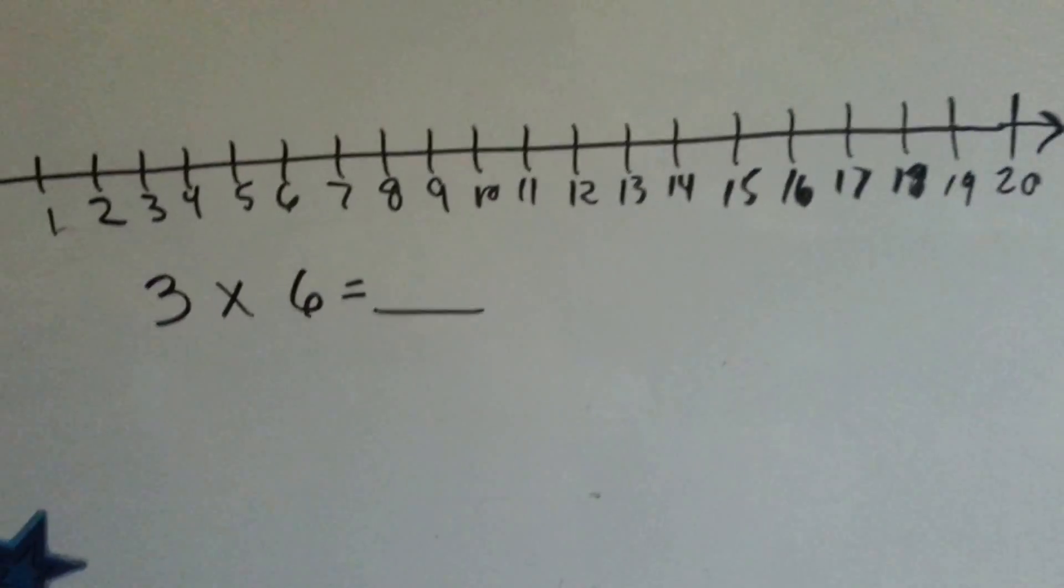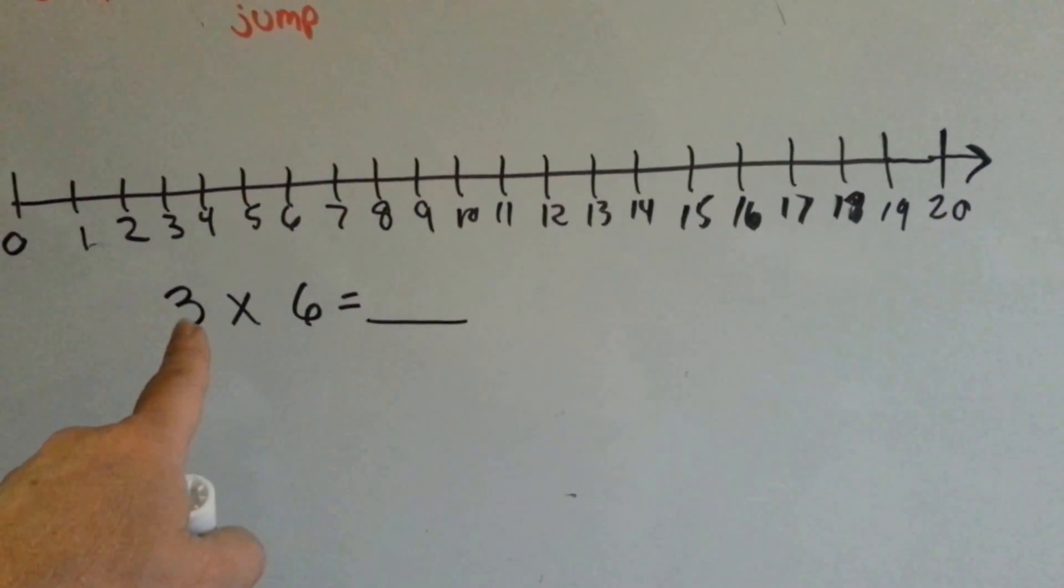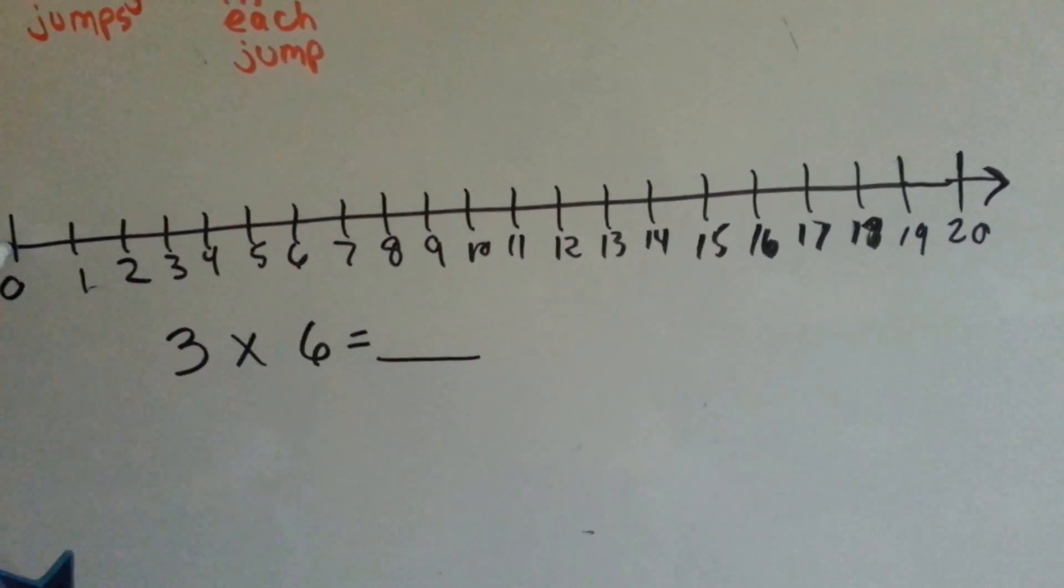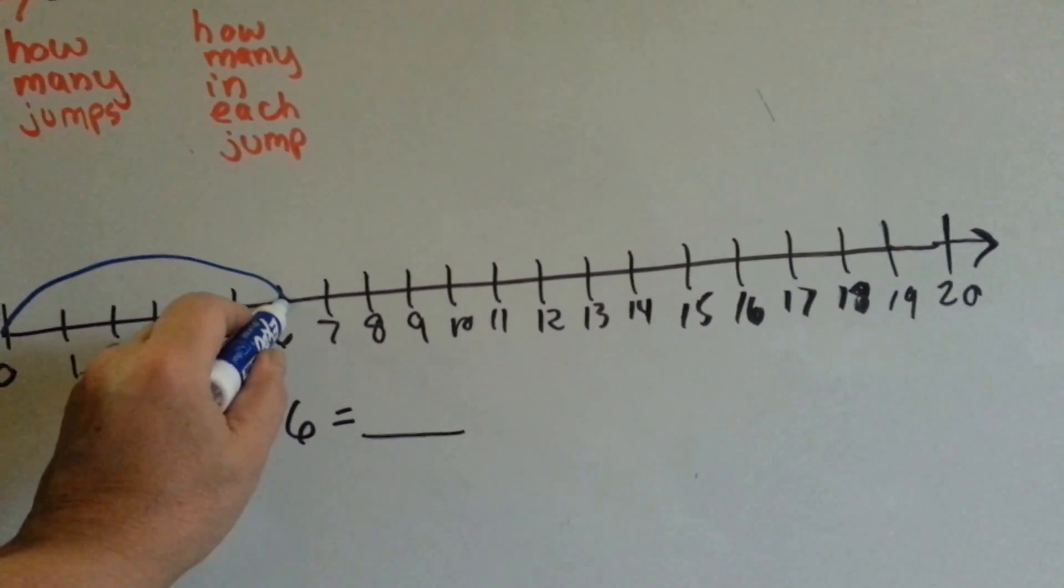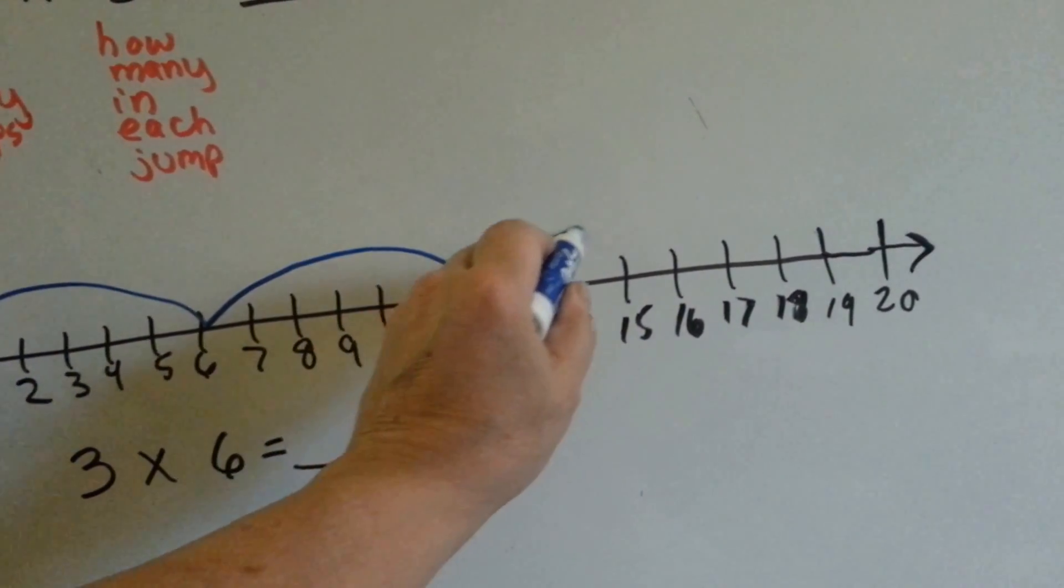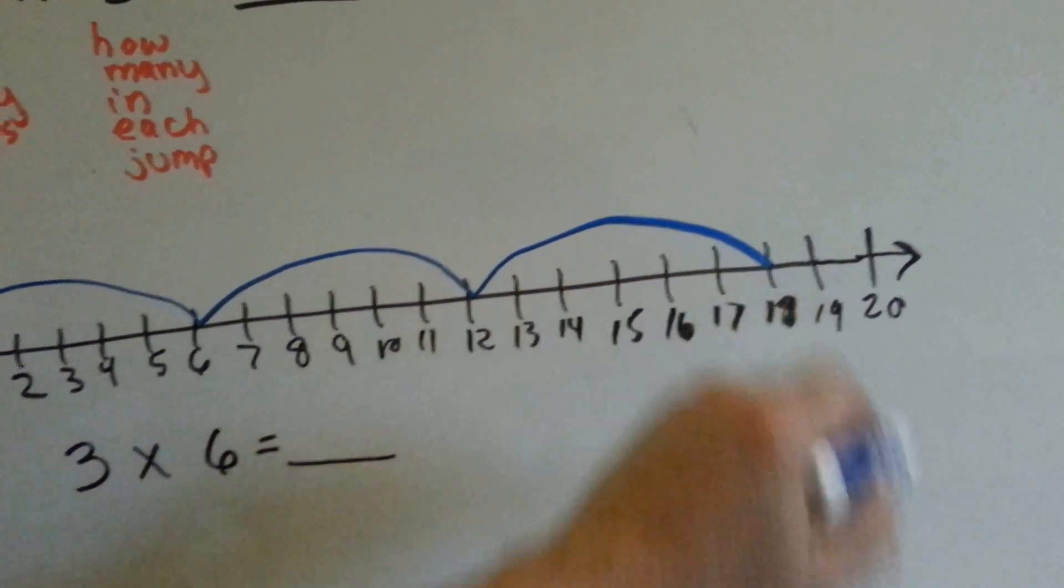Let's try it with another one. 3 times 6. We're going to do 3 big jumps that have 6 in them, okay? 1, 2, 3, 4, 5, 6, 1, 2, 3, 4, 5, 6, and 1, 2, 3, 4, 5, 6.